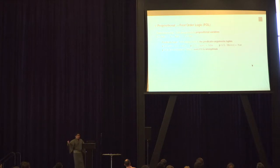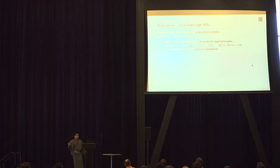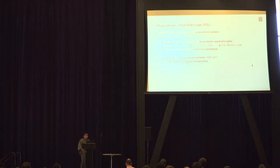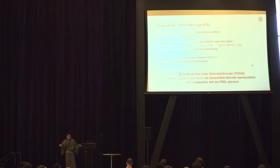But if you have predicates, the truth assignment is performed on tuples of predicates and arguments. For example: P(Canada, US) is true, P(US, Japan) is false, P(US, Mexico) is true — humans can guess the meaning of P is a 'next to' relationship, even if the predicate itself is anonymous. First-order logic provides a structured representation where the arguments help the interpretation. We propose the first-order state autoencoder, a neural network obtaining an interpretable discrete representation compatible with PDDL planners.